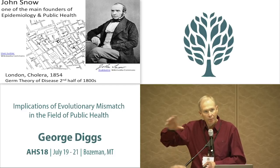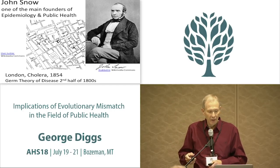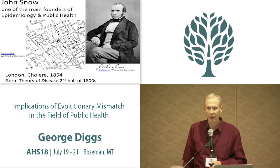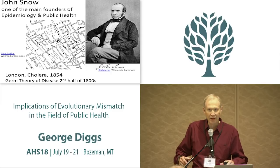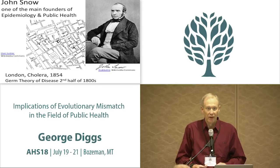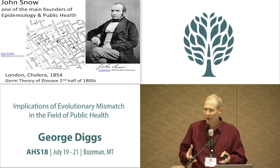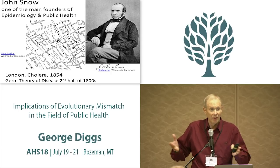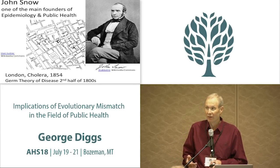Just to set us in a time frame: one of the main founders of epidemiology and public health was John Snow, who worked in the mid-1800s. He's famous for solving the London cholera epidemic by mapping cases, finding a well that was the source of infection, and removing its handle. I mention this because the germ theory of disease only fully developed from the middle to the late 1800s. Much of what we assume today just wasn't understood relatively recently.